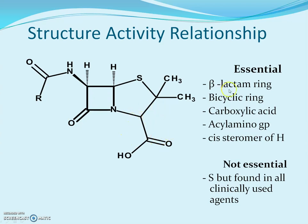To recap: the essential features are the beta-lactam ring, the bicyclic structure, the carboxylic acid group, the acyl amino side chain, and the cis stereochemistry of the hydrogens at C5 and C6. The sulfur is not strictly essential — if instead of sulfur you have carbon, the compound would still be active — but sulfur has been retained in all clinically used agents. In the next video, we shall see what the variables are and how they affect the activity.